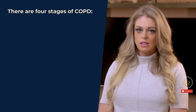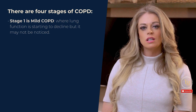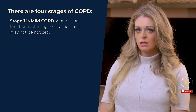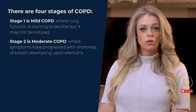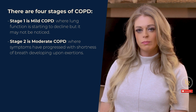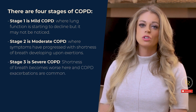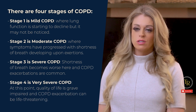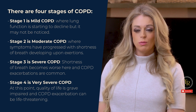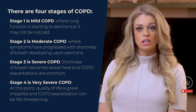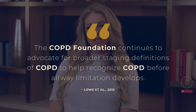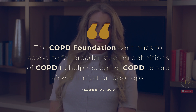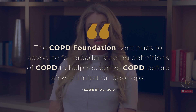COPD is a progressive disease with four stages. Stage one is mild COPD, where lung function is starting to decline but may not be noticed. Stage two is moderate, where symptoms have progressed with shortness of breath developing upon exertion. Stage three is severe, where shortness of breath becomes worse and COPD exacerbations are common. Stage four is very severe COPD — at this point quality of life is gravely impaired and exacerbations can be life-threatening. The COPD Foundation continues to advocate for broader staging definitions to help recognize COPD before airway limitation develops.